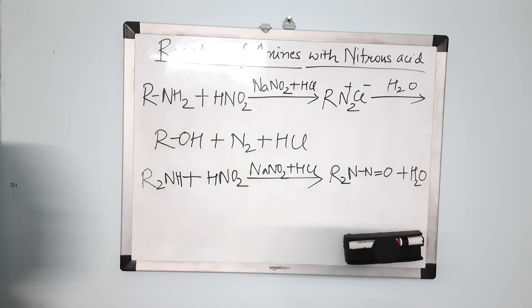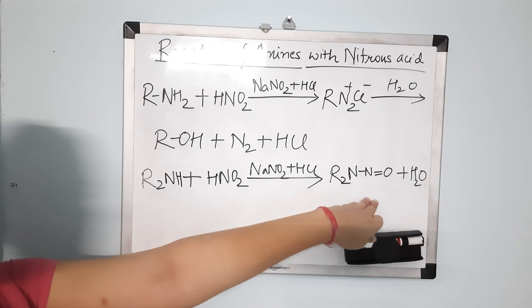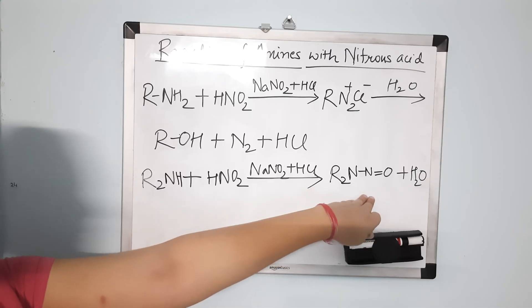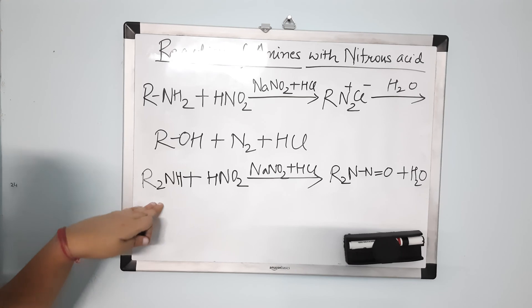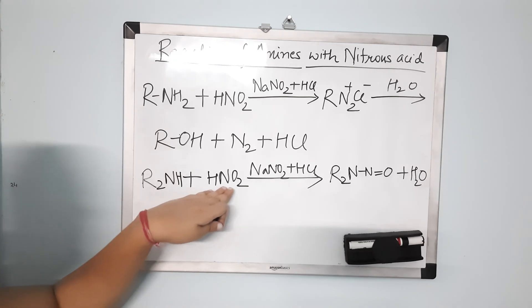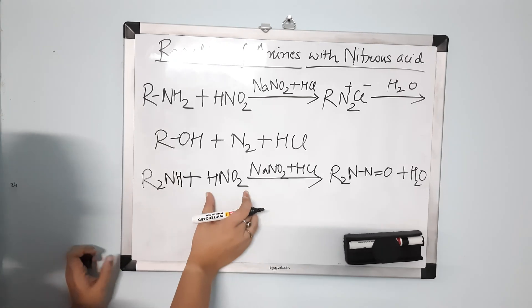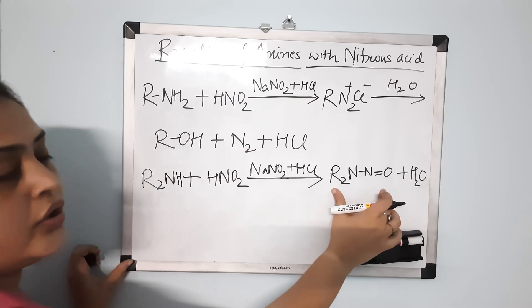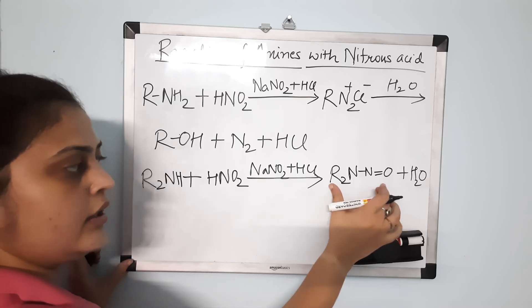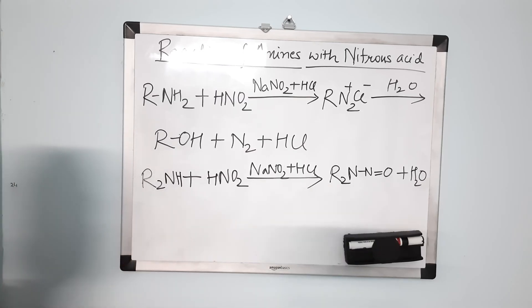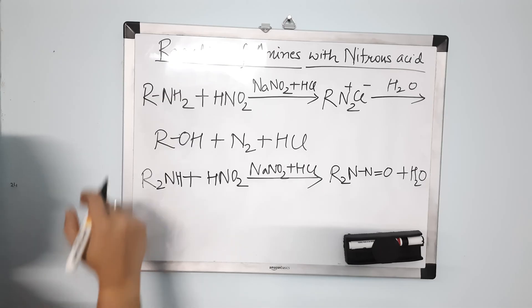Water (H₂O) is also formed. This nitroso amine is a yellow oily compound. This is the characteristic of secondary amine — when it reacts with nitrous acid, nitroso amine is formed, which is a yellow oily compound.